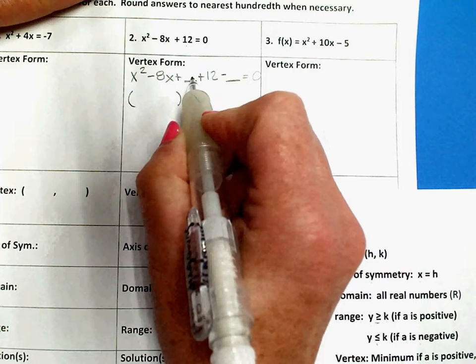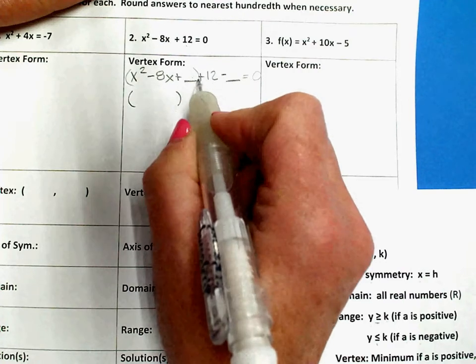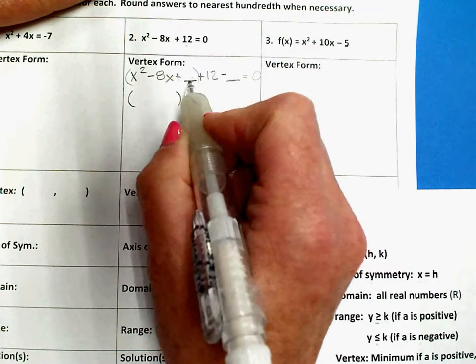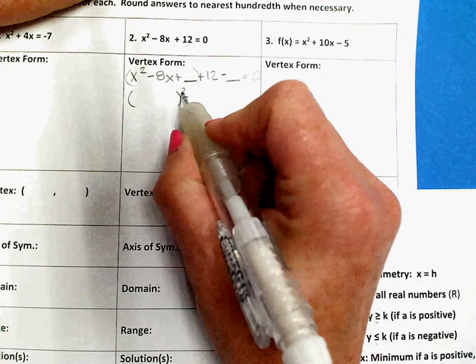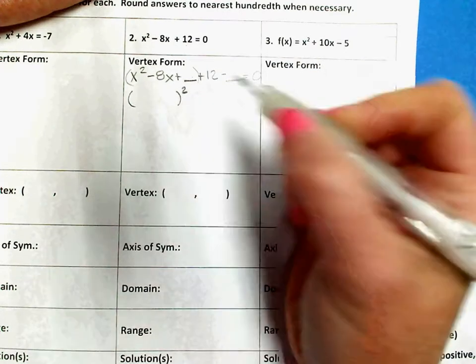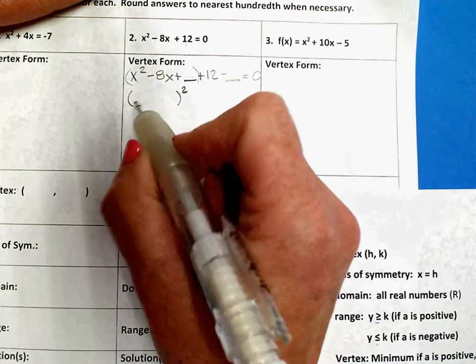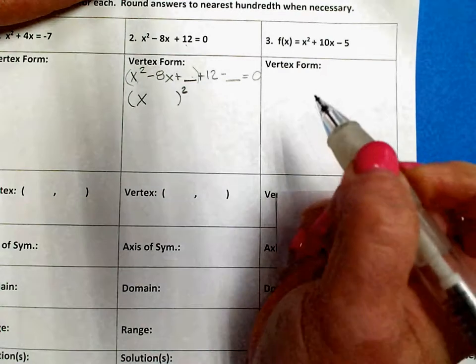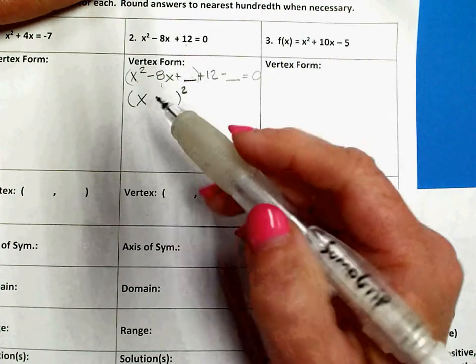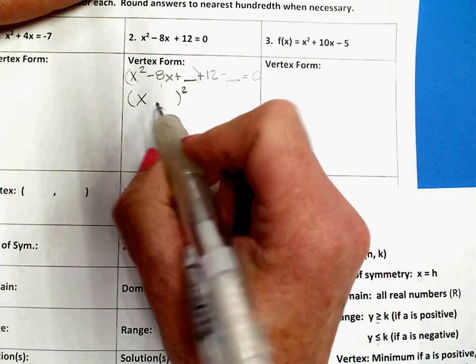The number that I add right here is going to create a perfect square trinomial for these three numbers that factors into something squared. You know that x squared will be x times x, and in order to get the middle term of negative 8, you're going to need half of this. So, half of negative 8 is negative 4.